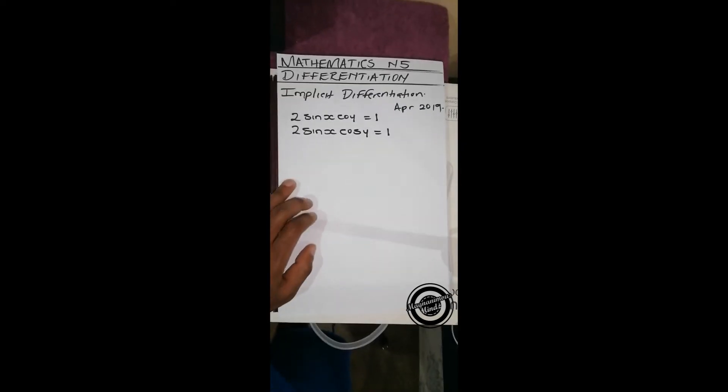multiplying, we've got to make use of the product rule. After that, we'll get an expression which will have dy/dx somewhere, and then we make dy/dx subject of the formula. Let's start with the